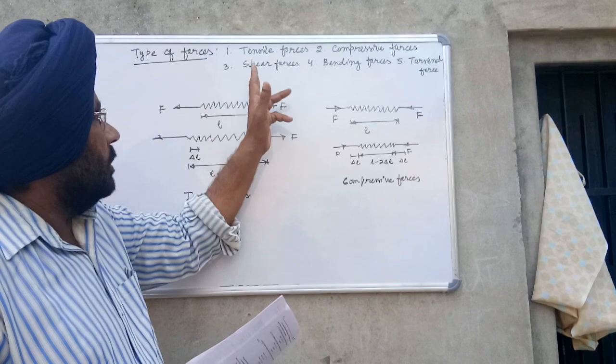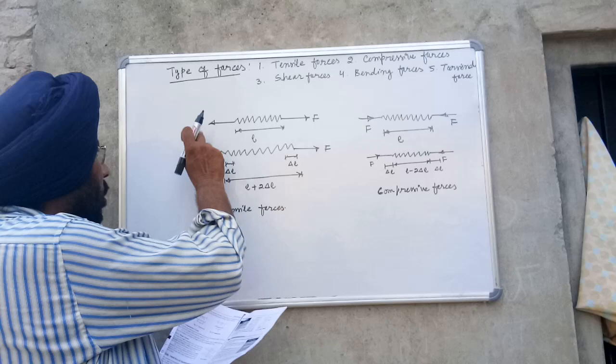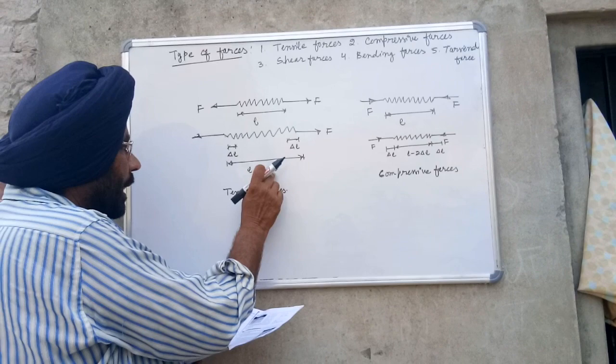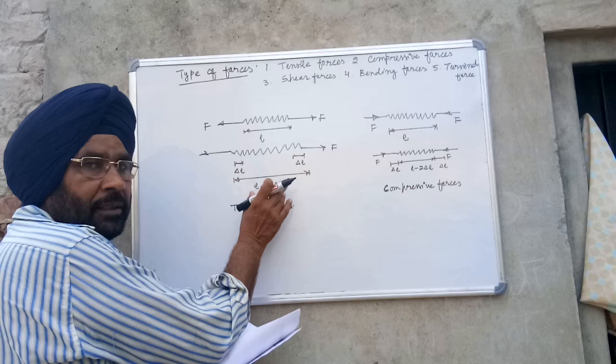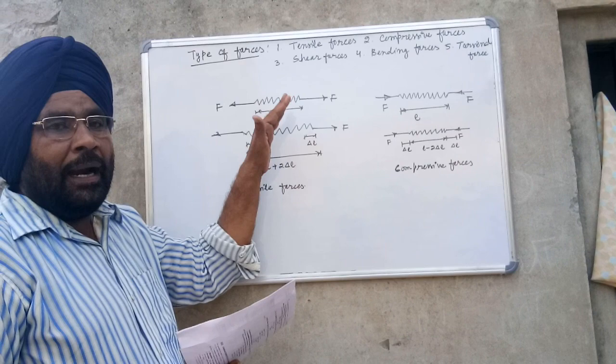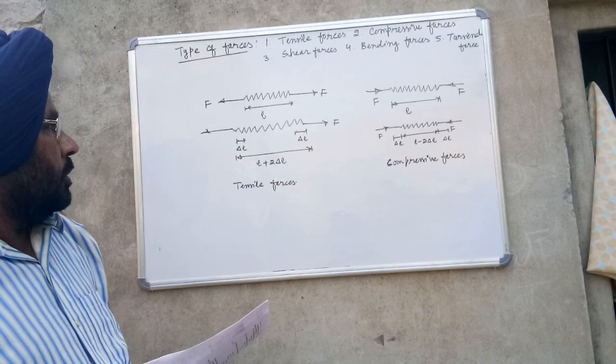Consider a spring of length L as shown in the figure. Two forces of equal magnitude F are acting on the spring. Due to this force, the length of the spring has increased to L plus 2 delta L, that is L plus delta L plus delta L. So, tensile forces are forces of equal magnitude but opposite direction, having the same line of action, that tend to increase the length of the body.